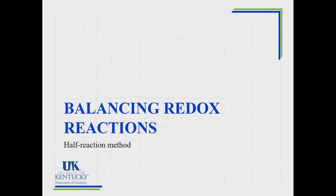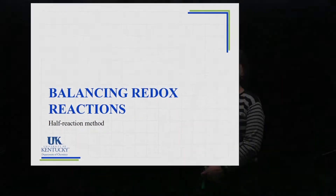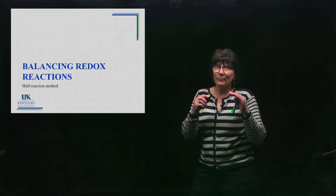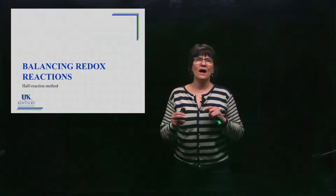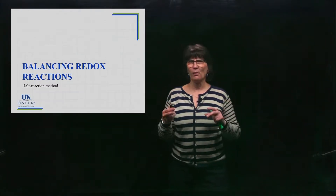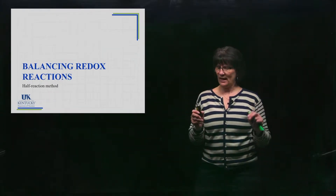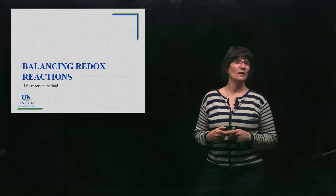Now we're going to practice the process for balancing redox reactions. The method we're going to learn is called the half-reaction method. It's very systematic — there are a lot of steps, but it's not a lot of problem-solving. It's just a matter of: can you count, and can you follow these steps?